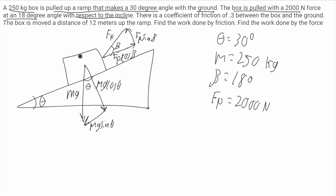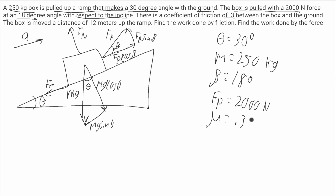The box has a normal force Fn perpendicular to the ramp. Since the box is being moved up the hill, I'll draw the acceleration arrow pointing up the hill. The friction force opposes this motion and points down the hill — I'll call this Ff. The coefficient of friction mu equals 0.3.